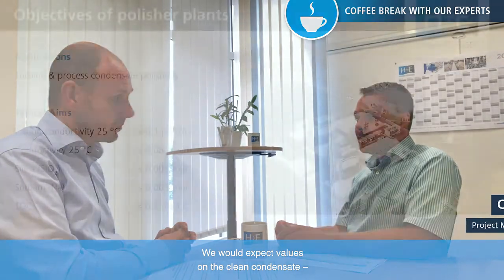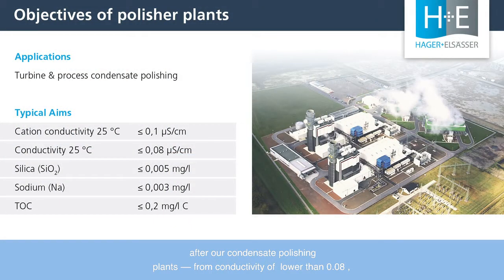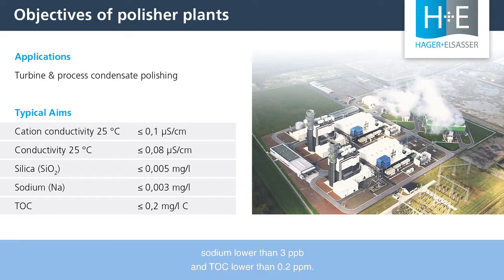What values would you expect? We would expect the following values on the clean condensate after our condensate polishing plants: conductivity lower than 0.08 micro siemens per centimeter, silica lower than 5 ppb, and sodium lower than 3 ppb.